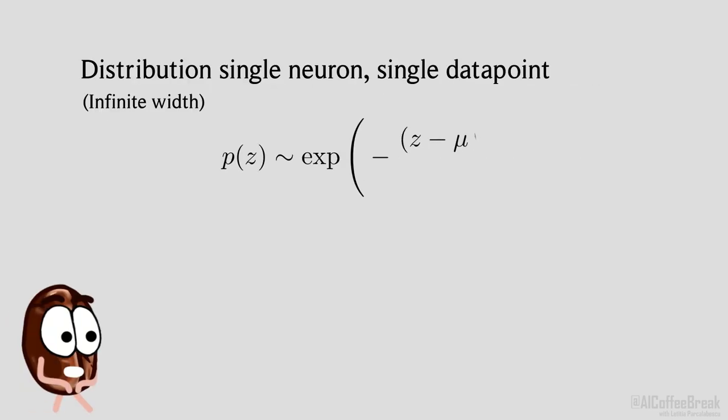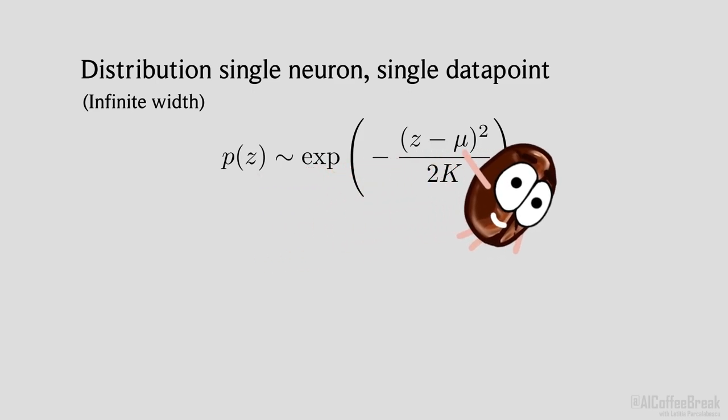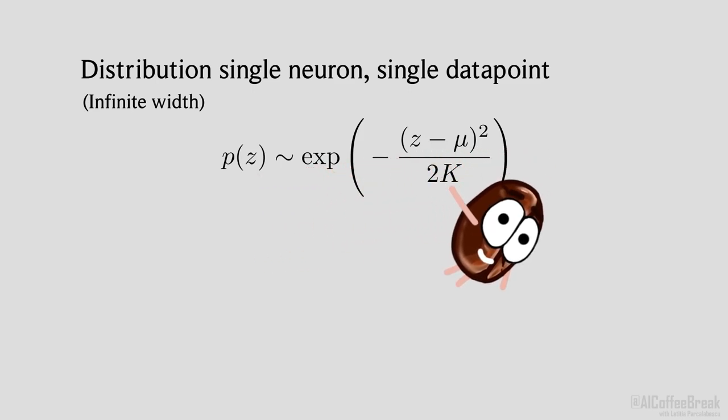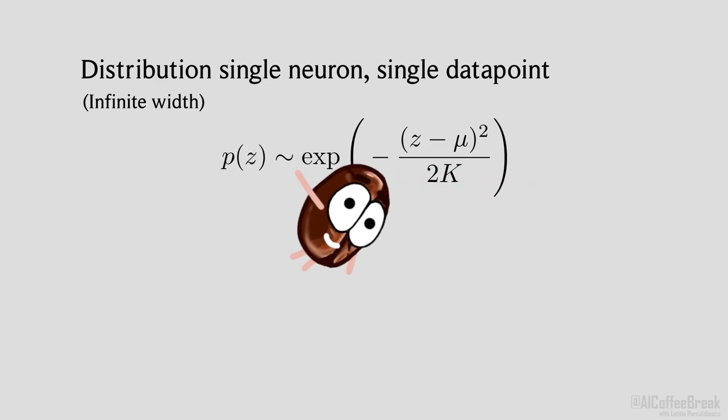To see where these differences come from, let's start with the expression for the Gaussian probability distribution, describing a single pre-activation neuron in the infinite width limit, like in our previous experiments, and build things up from there. Here, the neuron value is called z, it's centered around the mean mu and has a variance of k. Normally, there would be a constant in front to normalize the distribution, but we'll leave that out for now. The first thing to note is that the mean of the neurons is zero. The network is initialized using Gaussian weights that also have mean zero, so we don't have to worry about this.